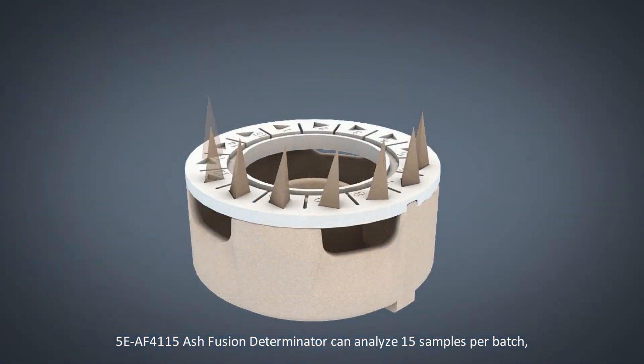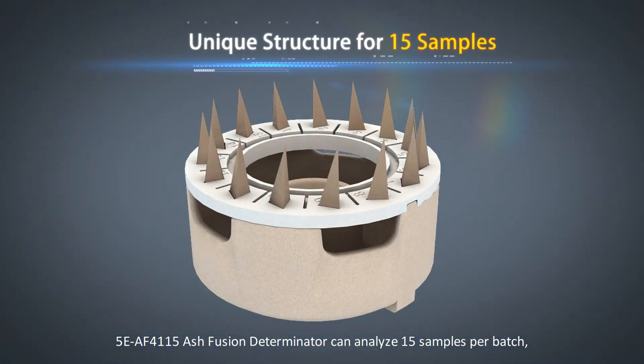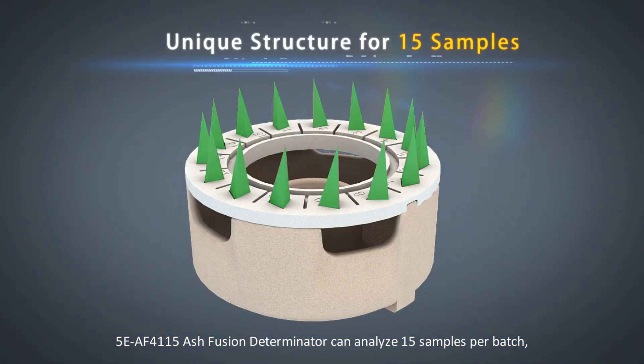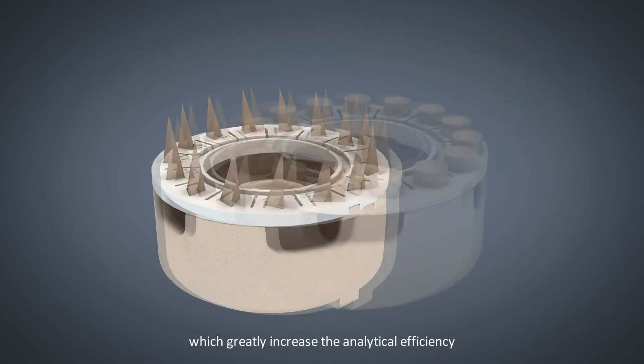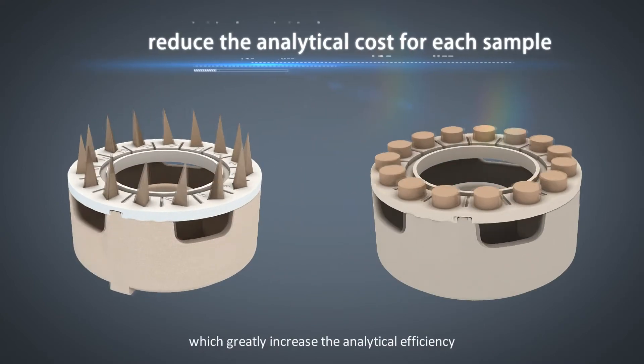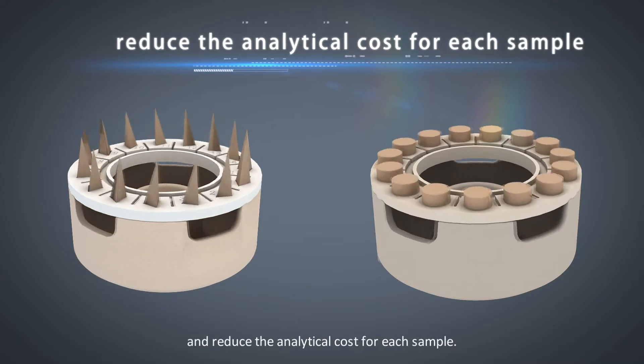The CKIC5E AF4115 Ash Fusion Determinator can analyze 15 samples per batch, which greatly increases analytical efficiency and reduces the analytical cost for each sample.